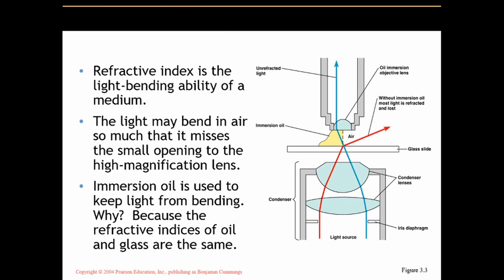Another term to know is the refractive index — the light-bending ability of a medium. It's based on pure distilled water, which has a refractive index of 1.0. The reason this matters is that when using the highest powered lens — the 100x objective giving 1,000x total magnification — the aperture, the opening to that objective lens, is very small. As magnification increases, the aperture gets smaller and smaller. As a result, light passing up through the condenser lenses has the opportunity to be refracted and lost.